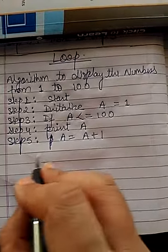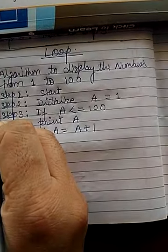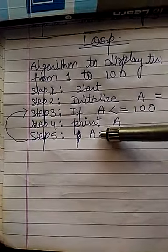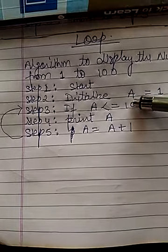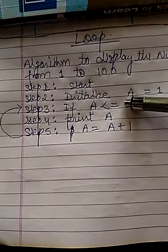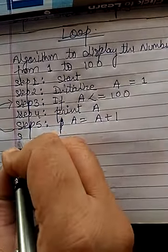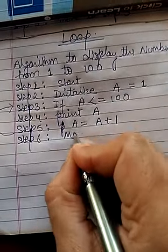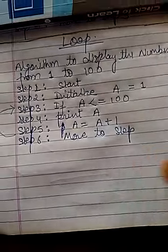Now, after that, again we have to print a. From here to here, again we have to move because value of a become 2. Again, we are checking the value of a is less than equal to 100 or not. If it is less than equal to 100, then again we will print a. So, Step 6. Move to Step 3.